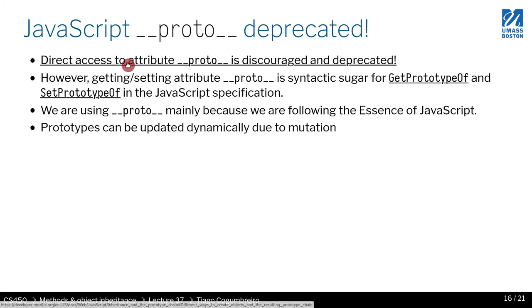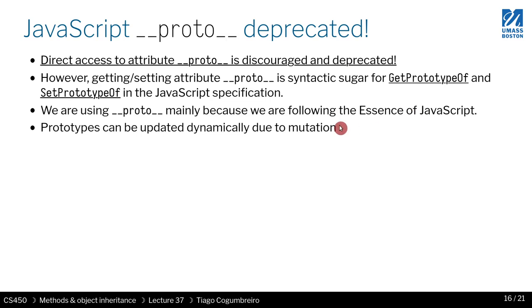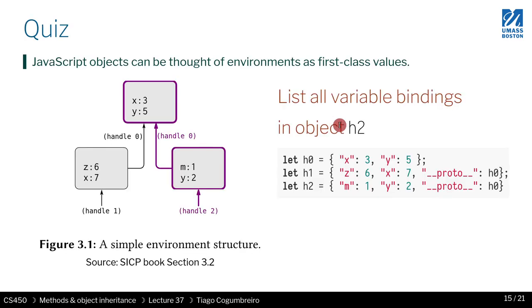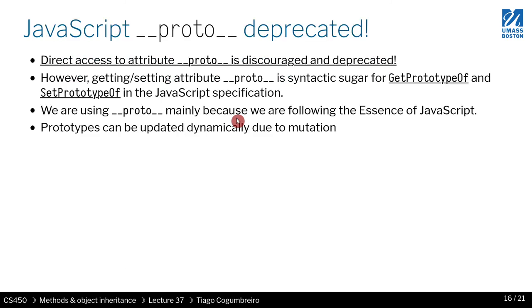You can see the exact same mechanism — looking up the parent — that you've learned for environments works as well in JavaScript. However, note that direct access to the `__proto__` attribute is discouraged and deprecated in the programming language. We're only using it to teach the mechanism behind JavaScript.